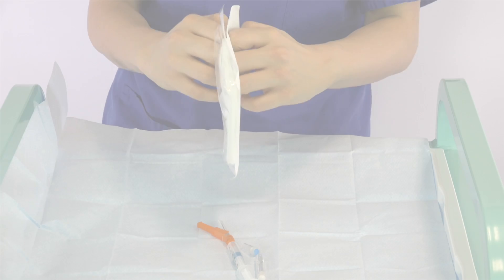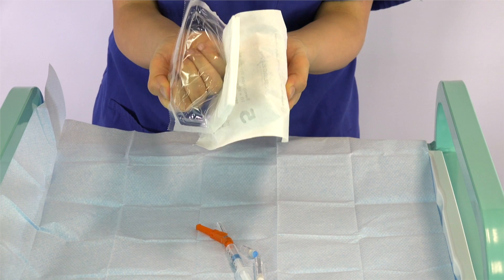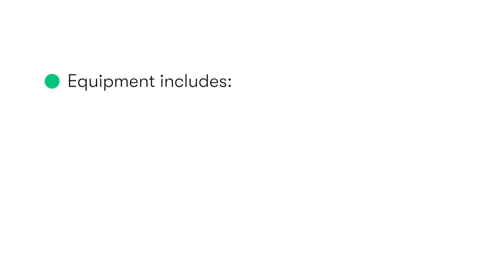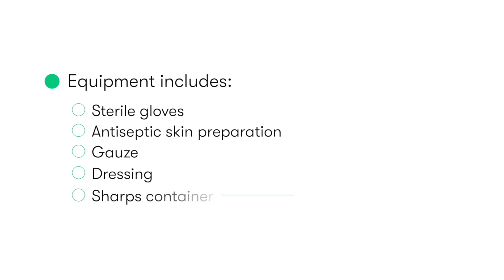We may now set up our equipment, either on a sterile trolley or a sterile tray. In performing an ABG sample, we need some gloves, preferably sterile, antiseptic skin solution, sterile gauze and dressing, a sharps container, and the needle and syringe.